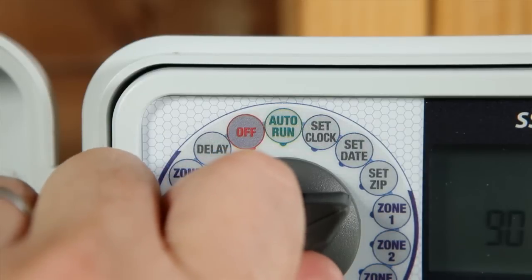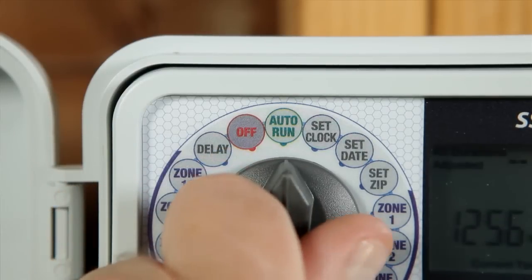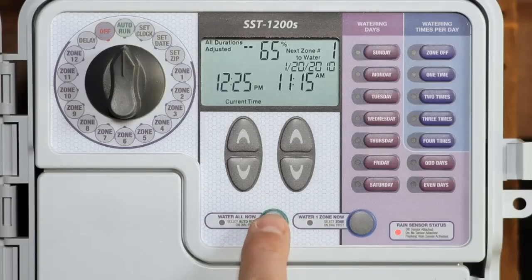Several options let you override this automatic scheduling. You can water all zones at any time when the dial is set to auto run. Just push the water all now button.